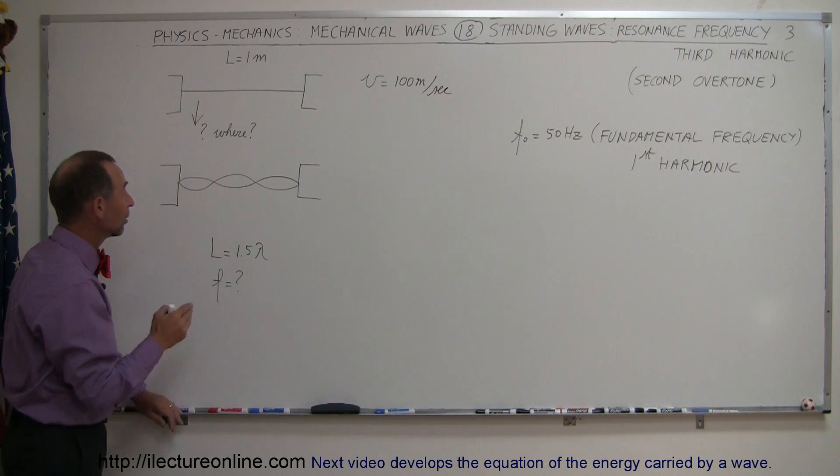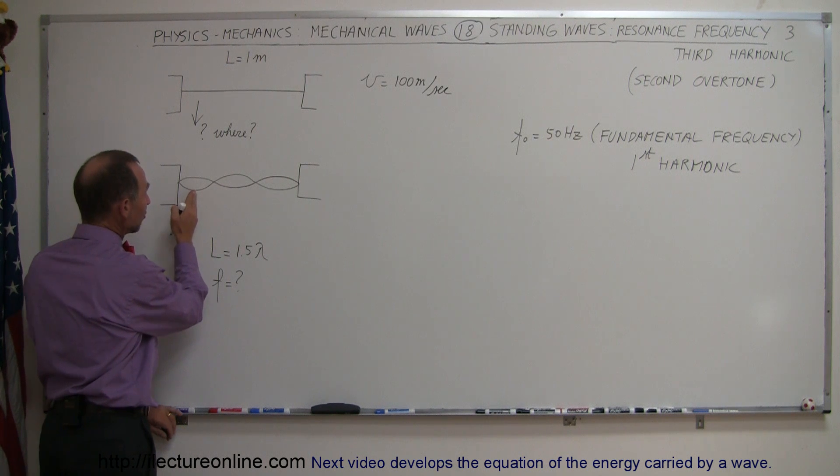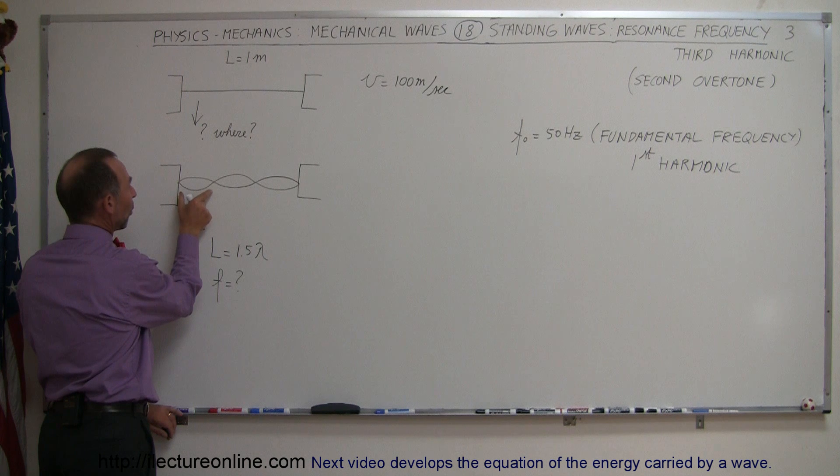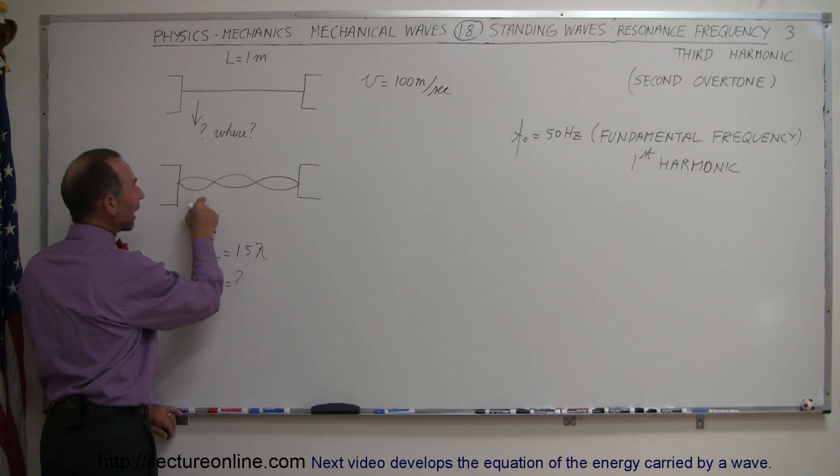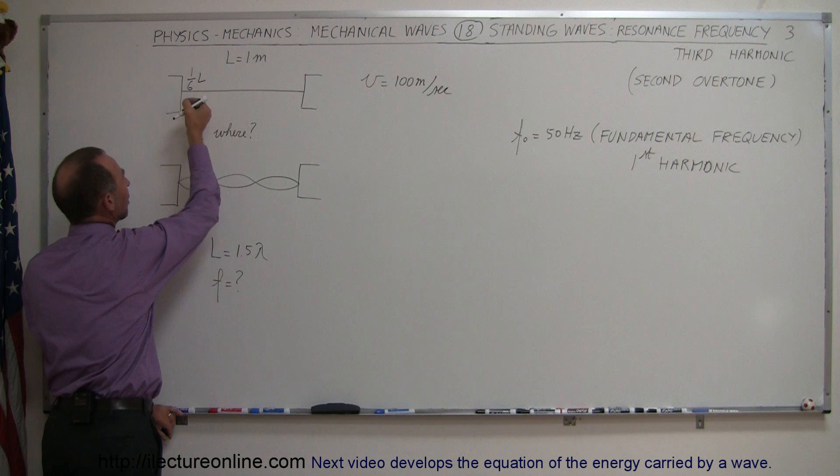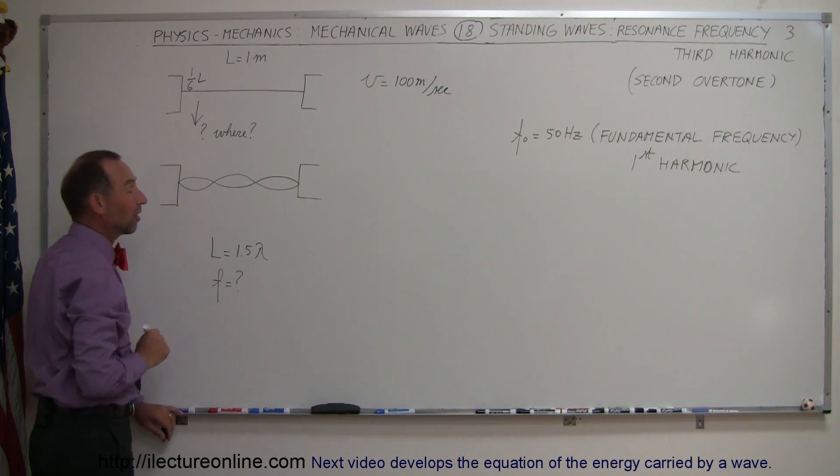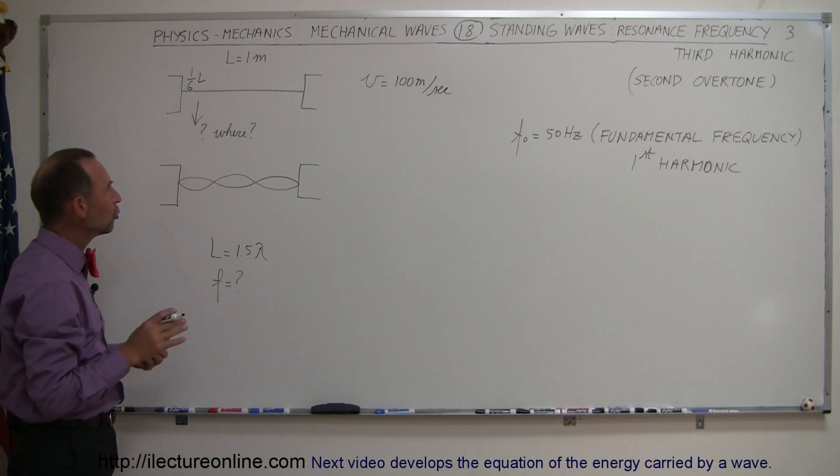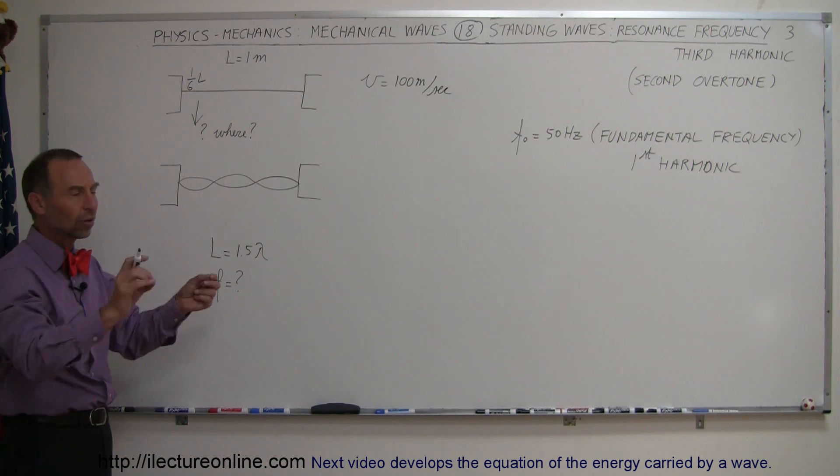So what you need to do is you need to pluck the string at the location of where you want that antinode to be. So this is one-half of one-third the length, so therefore you want to go to one-sixth the length of the string, pull on the string, and let it oscillate.